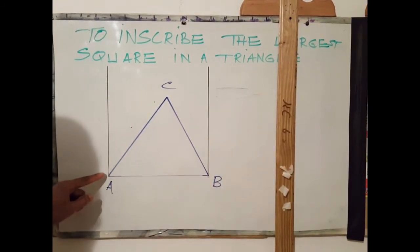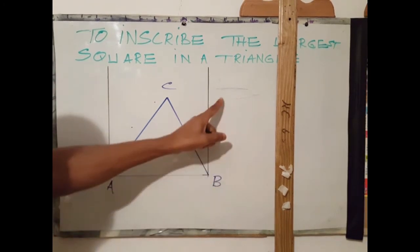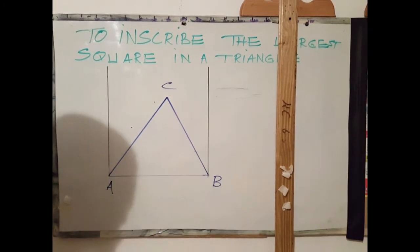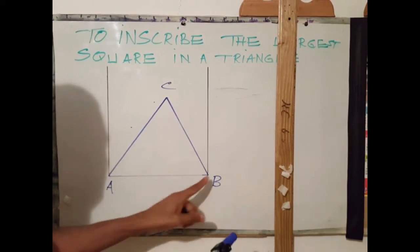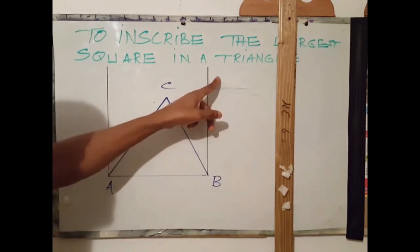Now that I've drawn a perpendicular line at point A and point B, I have three sides for my square. Next step, I will be using my compass to transfer this distance, the distance of A to B, on the left vertical line and also on the right vertical line.